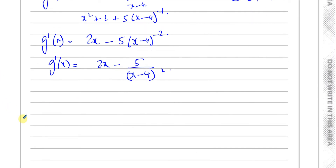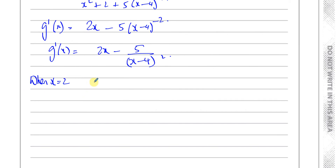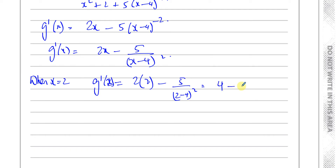So we can say when x equals 2, because we've got to find the tangent when x equals 2, g dash of 2 is going to be 2 times 2 minus 5 over 2 minus 4 squared, which gives you 4 minus 5 over — 2 minus 4 is minus 2 squared, which gives you 4. So 4 minus 5 over 4.